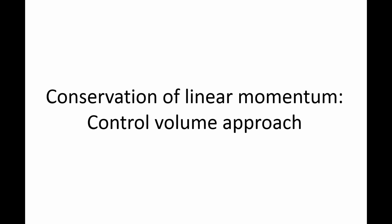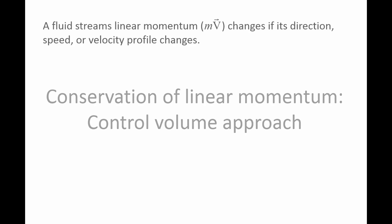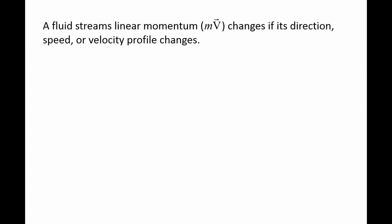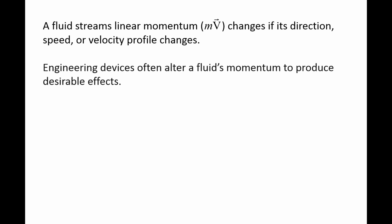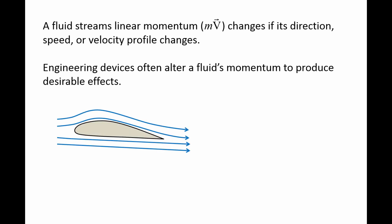In this lesson, we will derive the conservation of linear momentum equation for control volumes. Linear momentum is the product of mass and velocity. This means that the linear momentum of a fluid stream will change if its direction, speed, or velocity profile changes due to external forces. Many engineering-related devices are designed to alter the momentum of fluid streams to produce desirable effects. For example, airplane wings are designed to divert airflow to produce lift, and a jet engine accelerates exhaust gases to produce thrust.